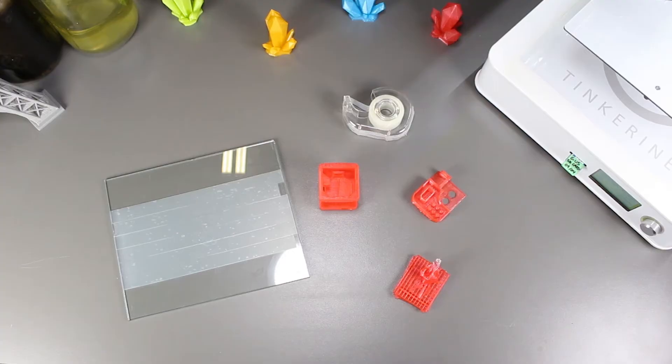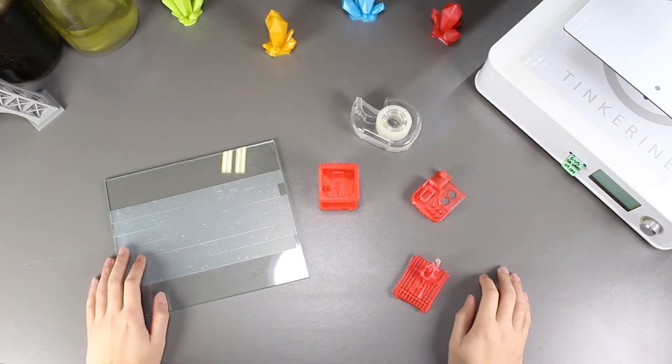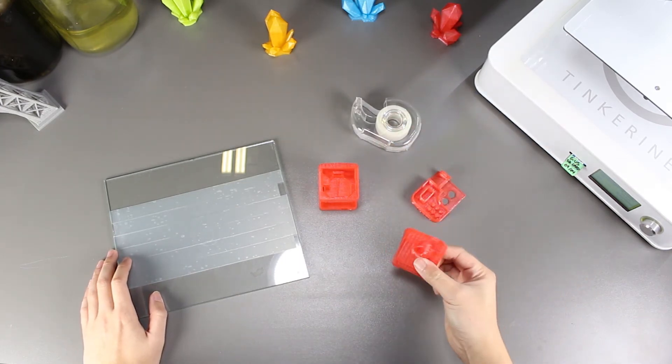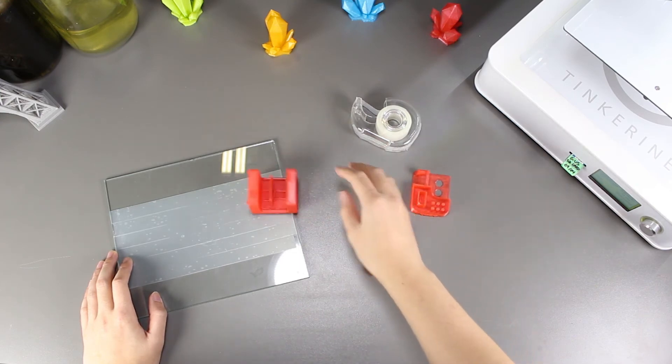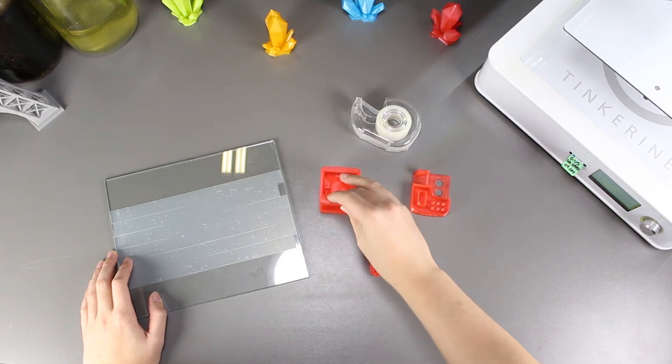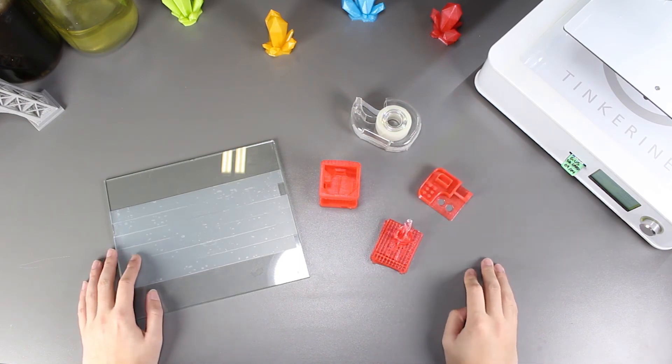Well, there we have it. We tried using scotch tape as bed adhesive and surprisingly, it works. It sticks, but it doesn't seem very reliable and the corners lift as well. It's an interesting find, but I wouldn't recommend using scotch tape. It's just not as reliable as blue tape. Well, that's the end of our experiment today.